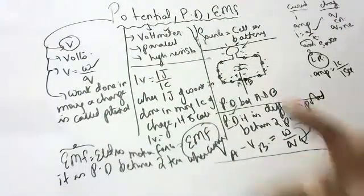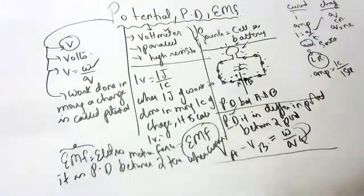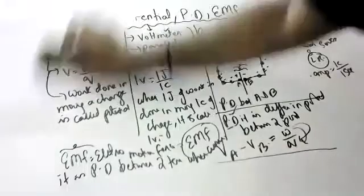Now we will do 3 to 4 numericals on this. Small, simple numericals, children.